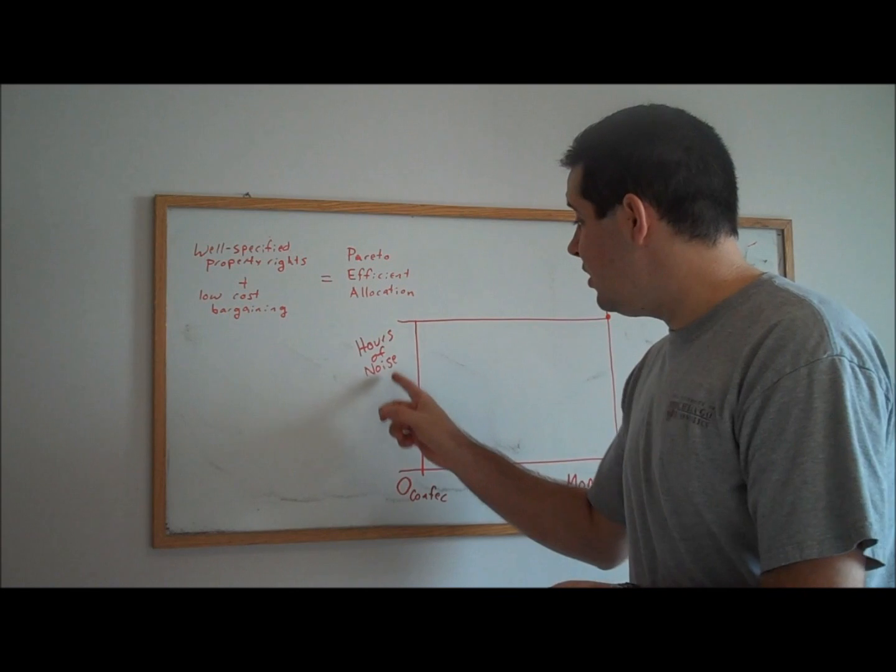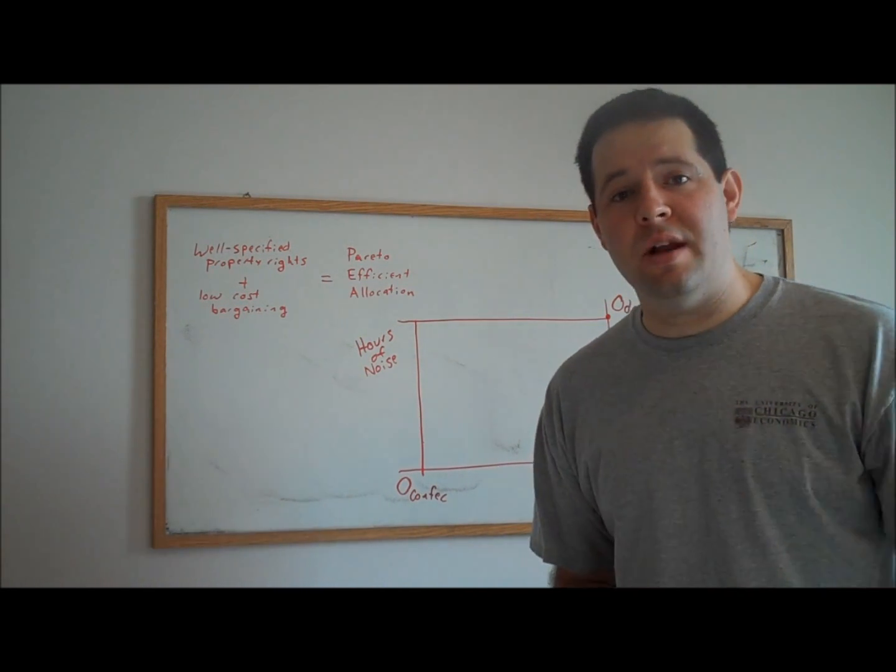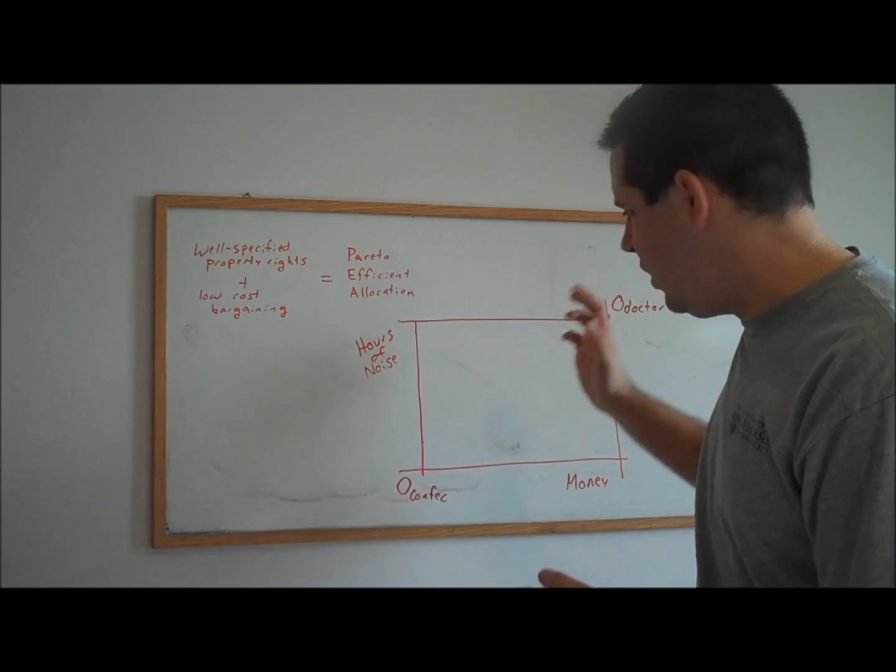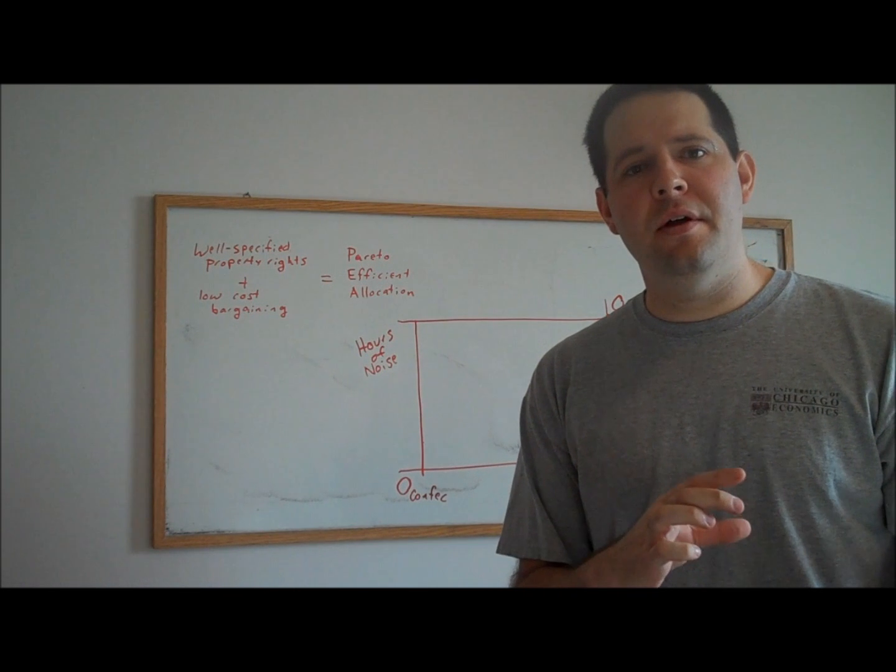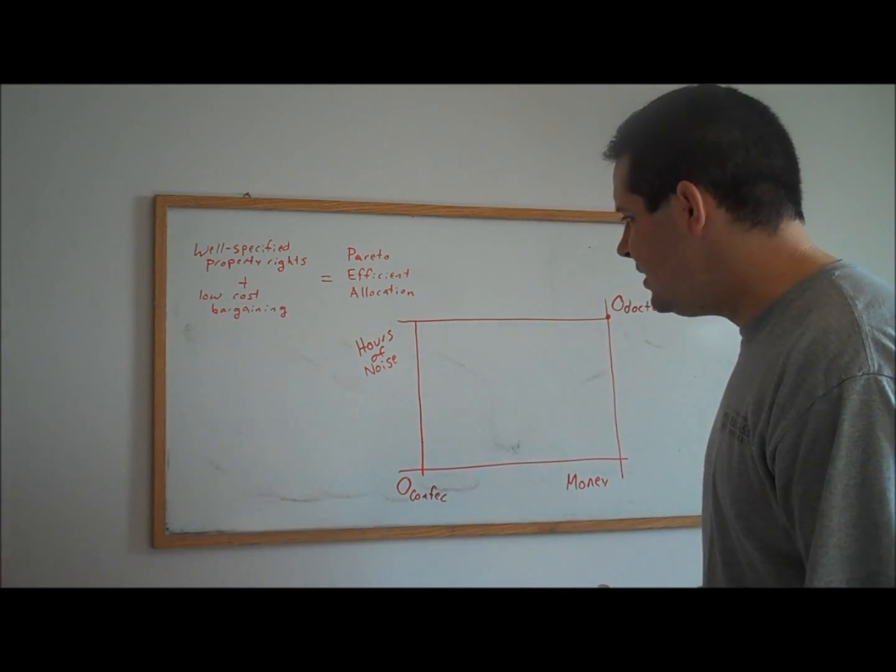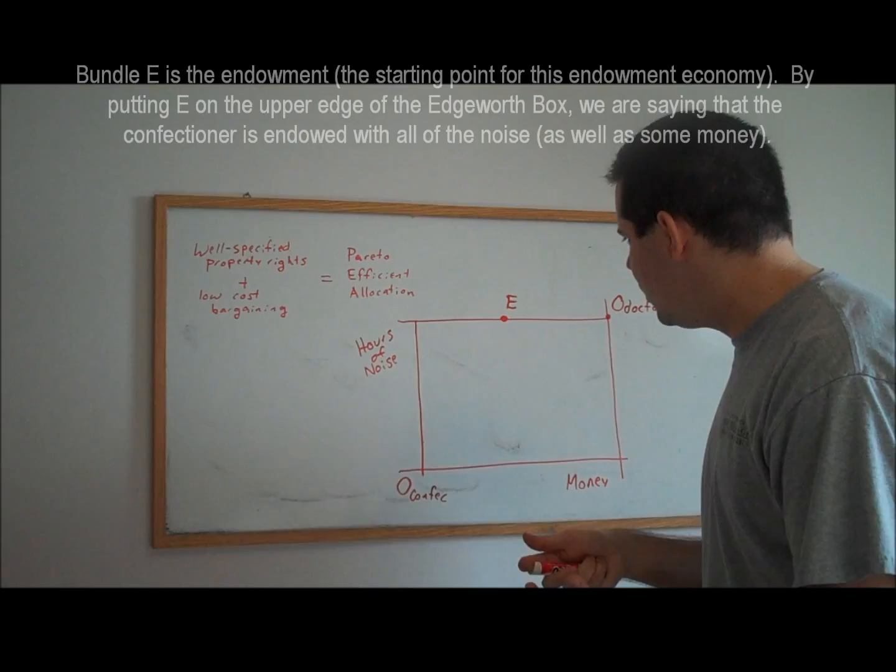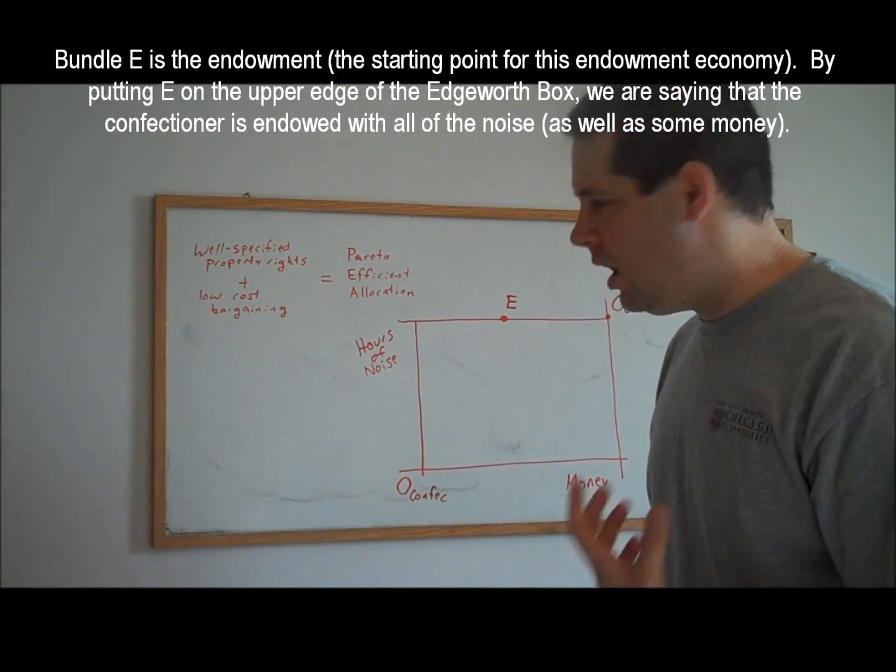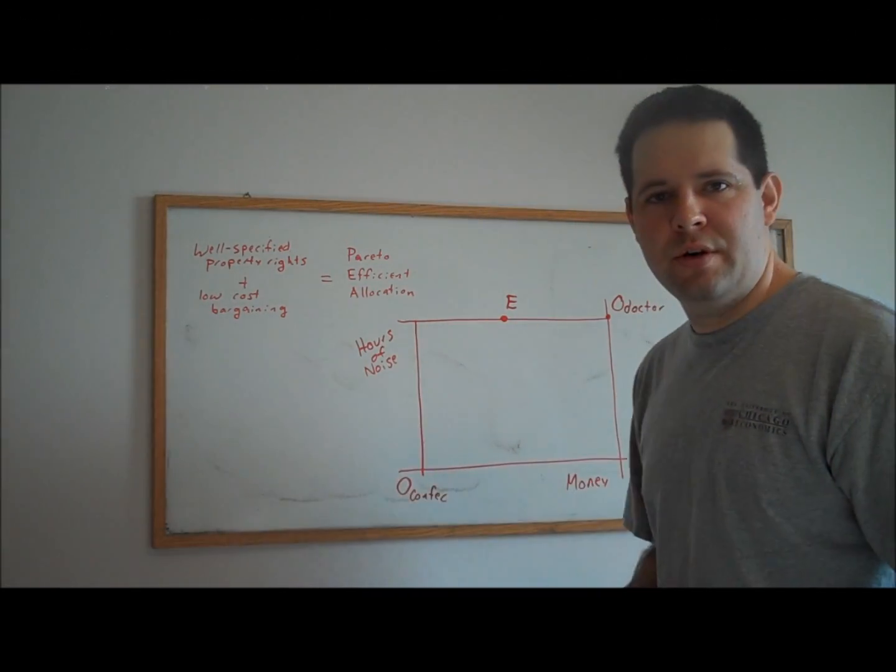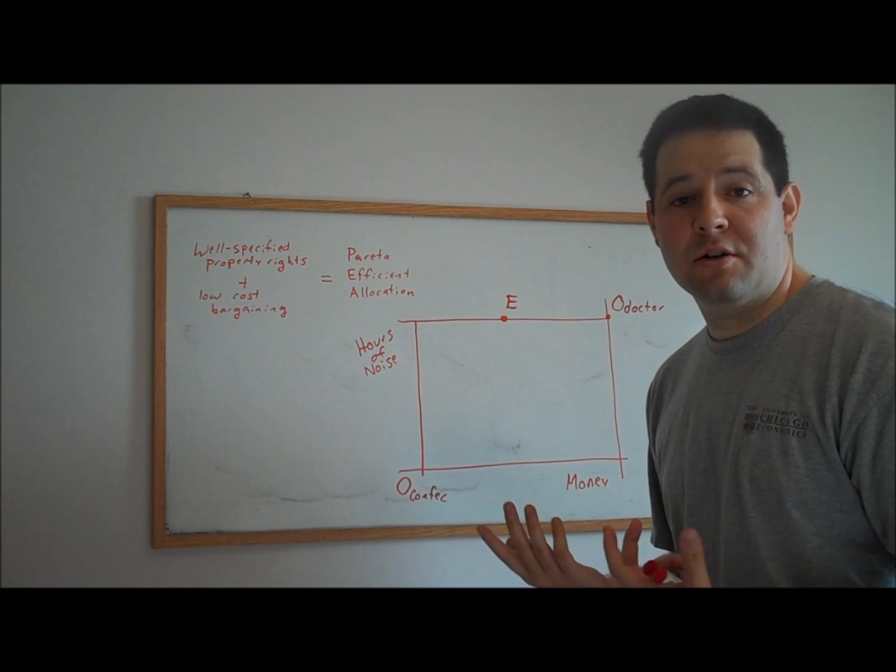Notice that what I'm doing here is I'm generalizing this idea of an externality as a finely divisible good. Previously, it was just that the doctor could have silence or the confectioner could have noise. Now, the doctor could request, say, 1.1 hours of silence. We could think about trading the noise for money in this case, and so that would be the idea of achieving an efficient transfer. Let's start off by saying that the confectioner is endowed with all of the noise. This is what it means in the Edgeworth box to think about ownership of the externality. The confectioner has the right, if he wants to, to make that much noise, and he can sell some of that right for some of the other good, money in this case, to the doctor if the doctor wishes to purchase that.